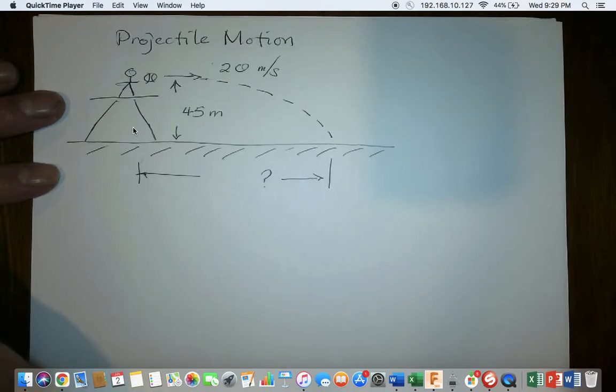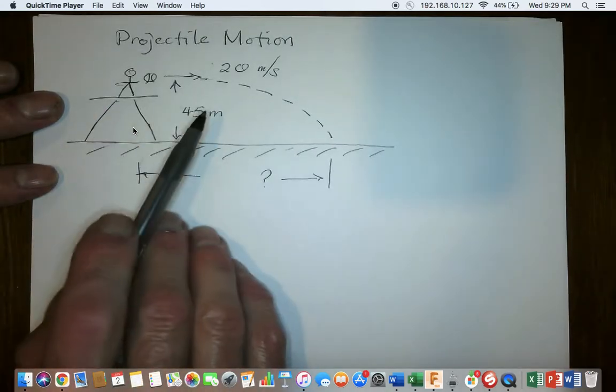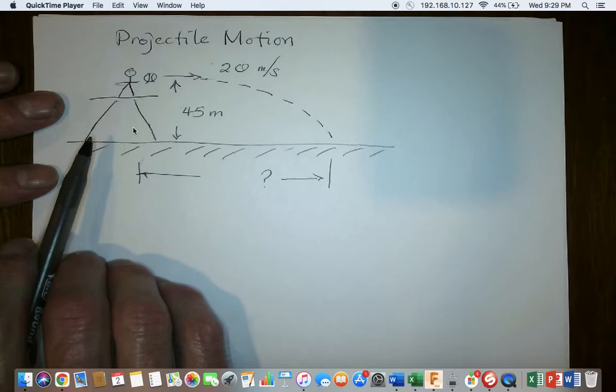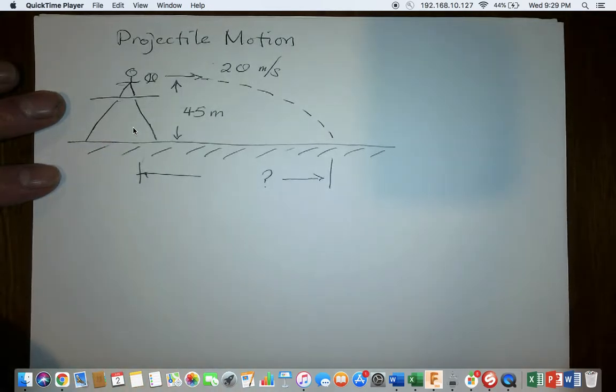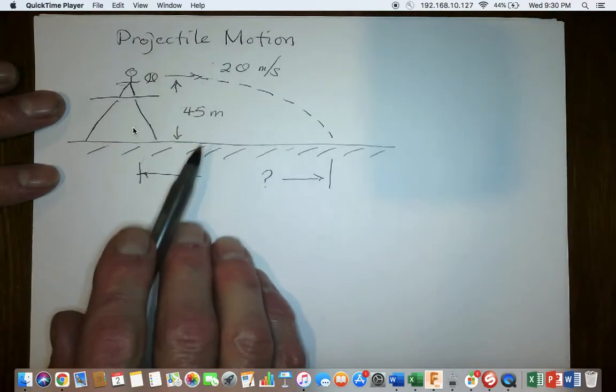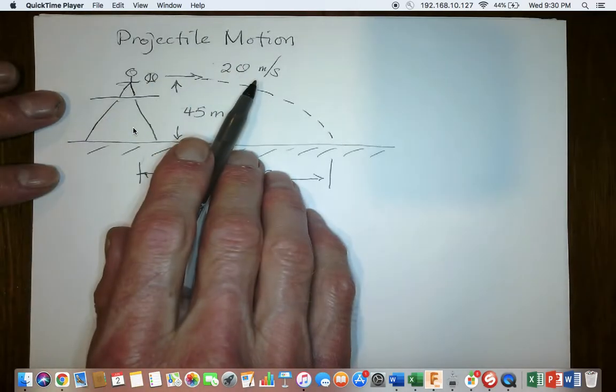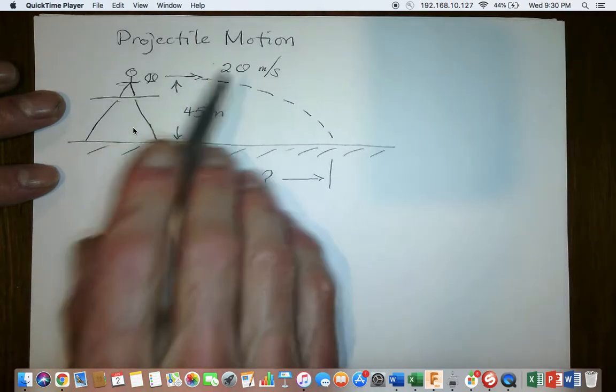In this case, we have a baseball player up on a tower. They throw a baseball at 20 meters per second, but as we know, that baseball is going to fall the entire time it's moving. This baseball starts off 45 meters from the ground and starts off at a horizontal velocity of 20 meters per second.